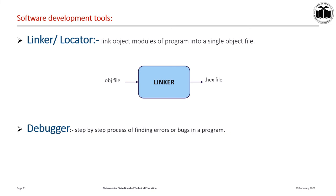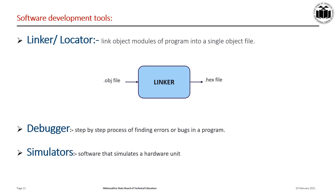Debugging is the step-by-step process of finding errors or bugs in a program so that the bugs can be removed to make the program function in the way it was desired. There are several tools available to do the debugging process — these tools are called debuggers. A simulator is software that simulates a hardware unit like an emulator, peripheral, network, and I/O devices on a PC. It defines a processor or processing device as well as various versions for the target system.